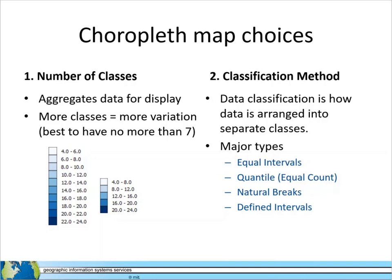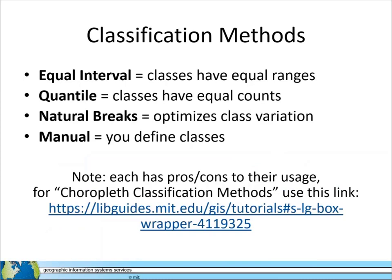The major types of classification method are equal intervals, quantile, natural breaks, and defined intervals. In equal interval classification, classes have equal ranges such as ranges of 1 to 5, 5 to 10, and 10 to 15. In quantile classification, classes have equal counts such as five items in each class. Natural breaks classification uses an algorithm to optimize class variation — in other words, an algorithm figures out where the best breaks between classes should be. In manual classification, a user sets the breaks based on prior knowledge of the data.